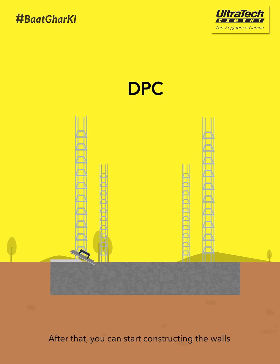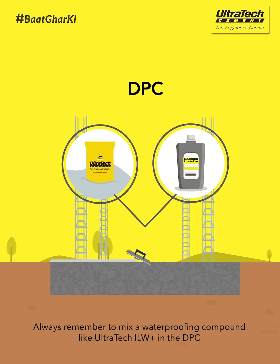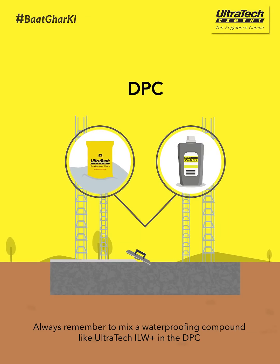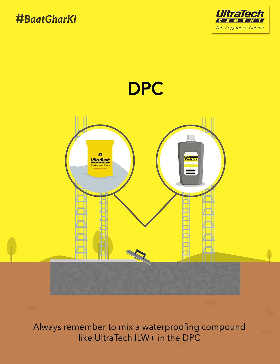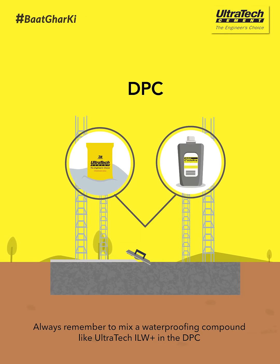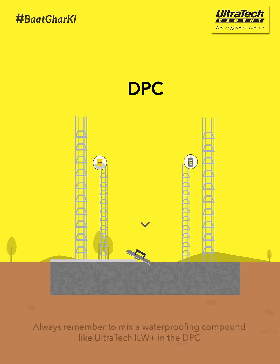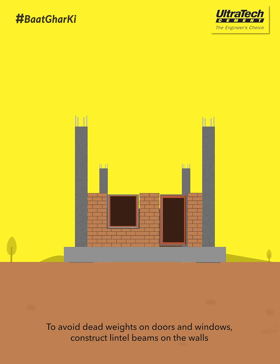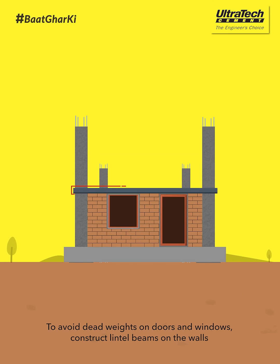After that, you can start constructing the walls. Always remember to mix a waterproofing compound like Ultratech ILW Plus in the DPC. To avoid dead weights on doors and windows, construct lintel beams on the walls.